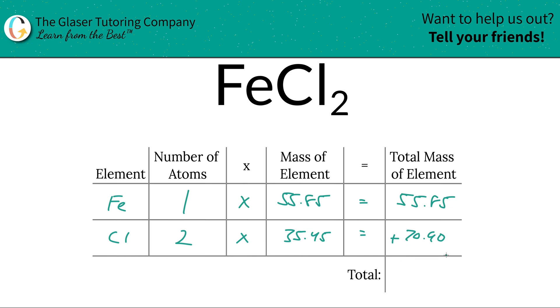To find the total mass of the entire compound is very simple. Just add up this column now, and that works out to be 126.75. Since we're solving for molar mass, the units are in grams per mole, and now you know how to find the molar mass of iron 2 chloride.